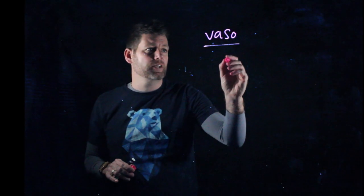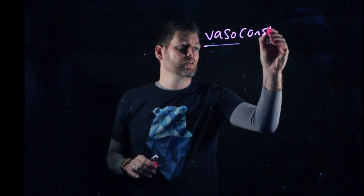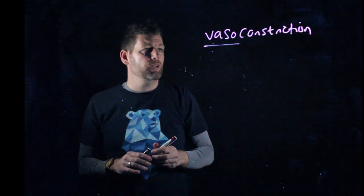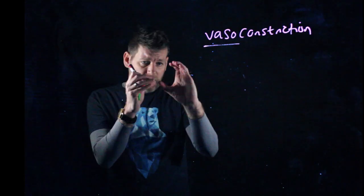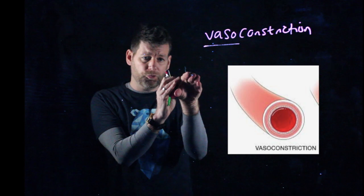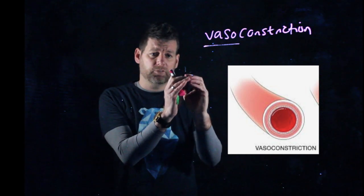Well the blood vessels themselves, they vasoconstrict. So the term vasoconstrict means to tighten. And actually when you vasoconstrict the blood vessel, blood pressure goes up because there's less space for the blood to shoot through that particular vessel.